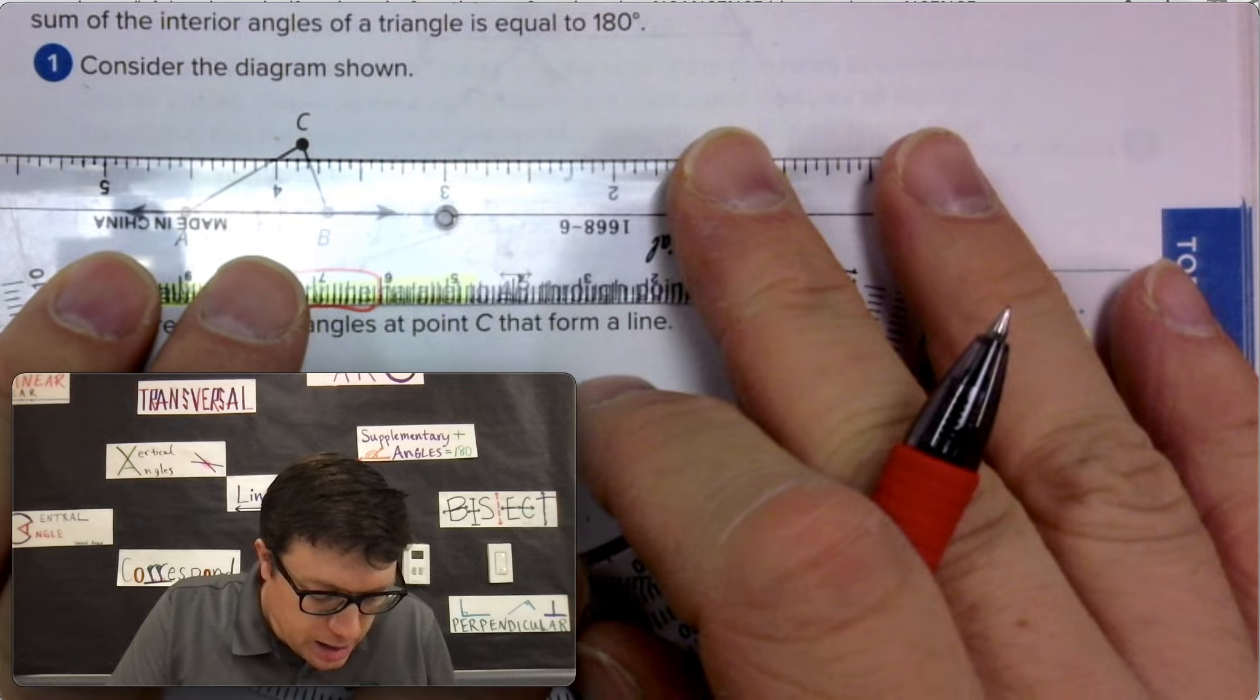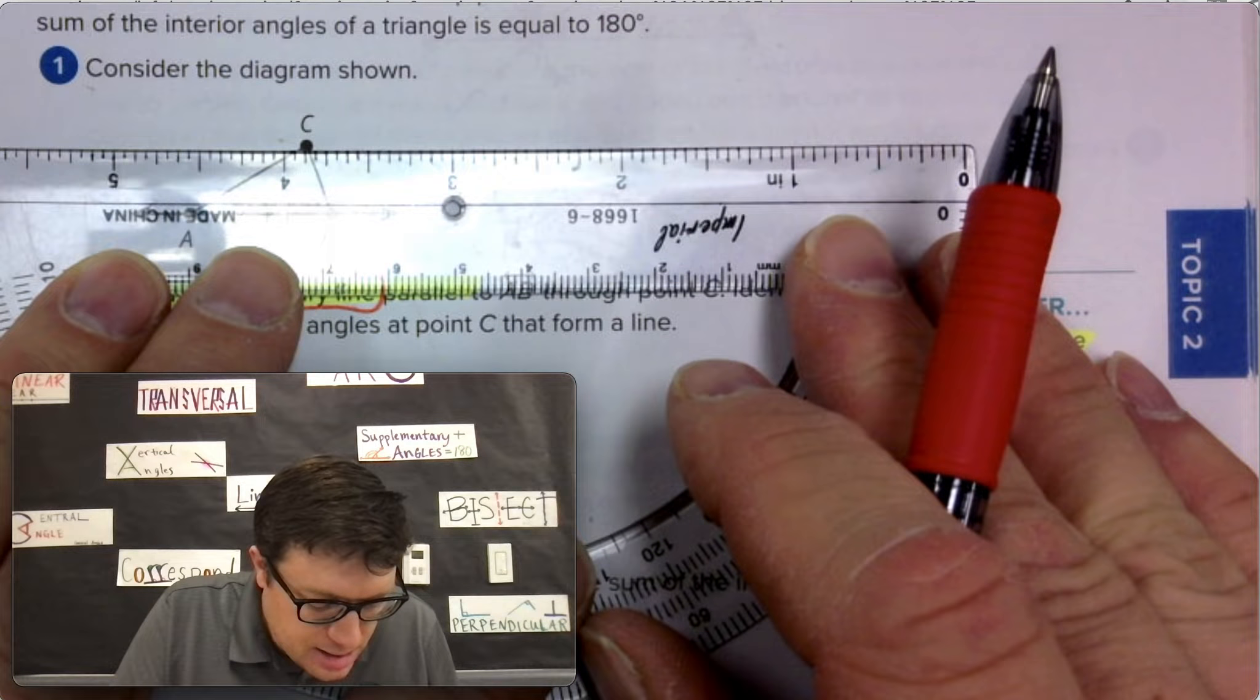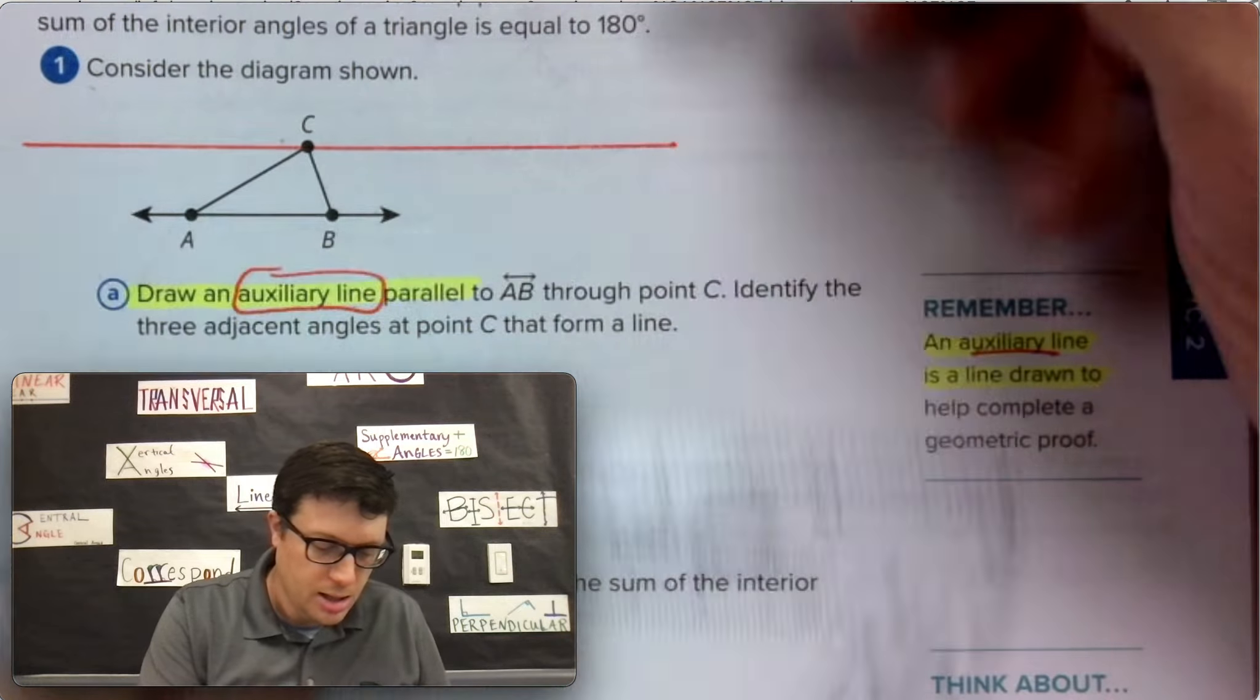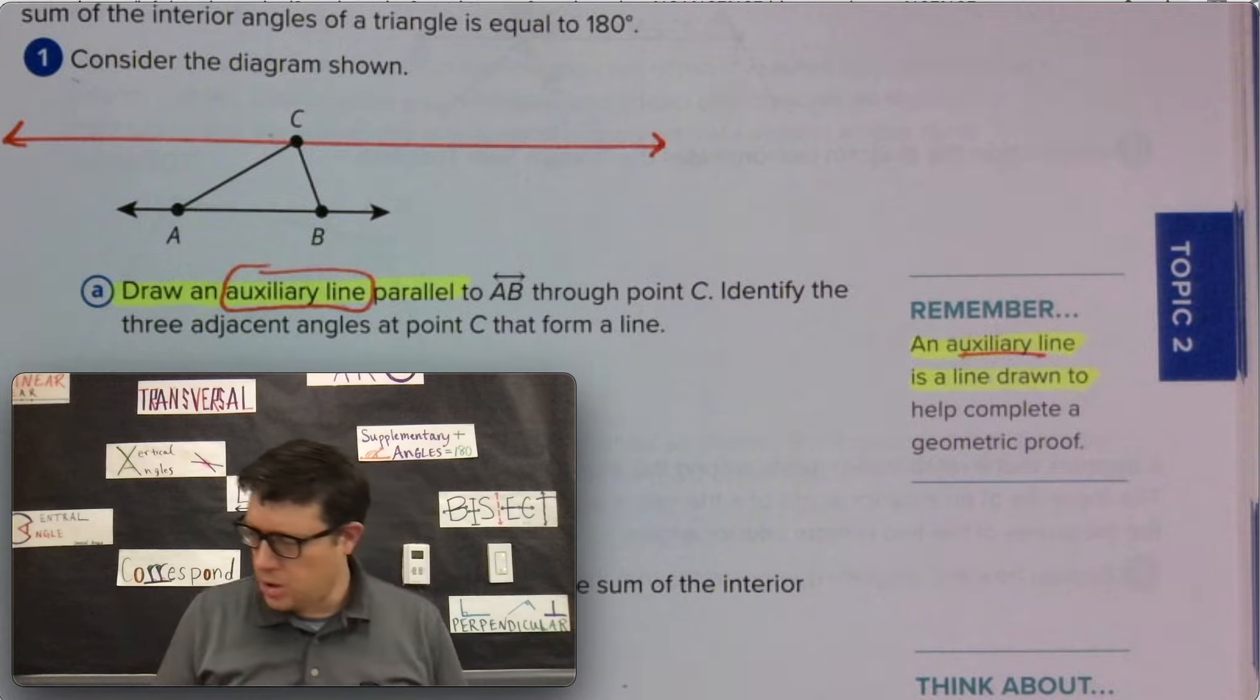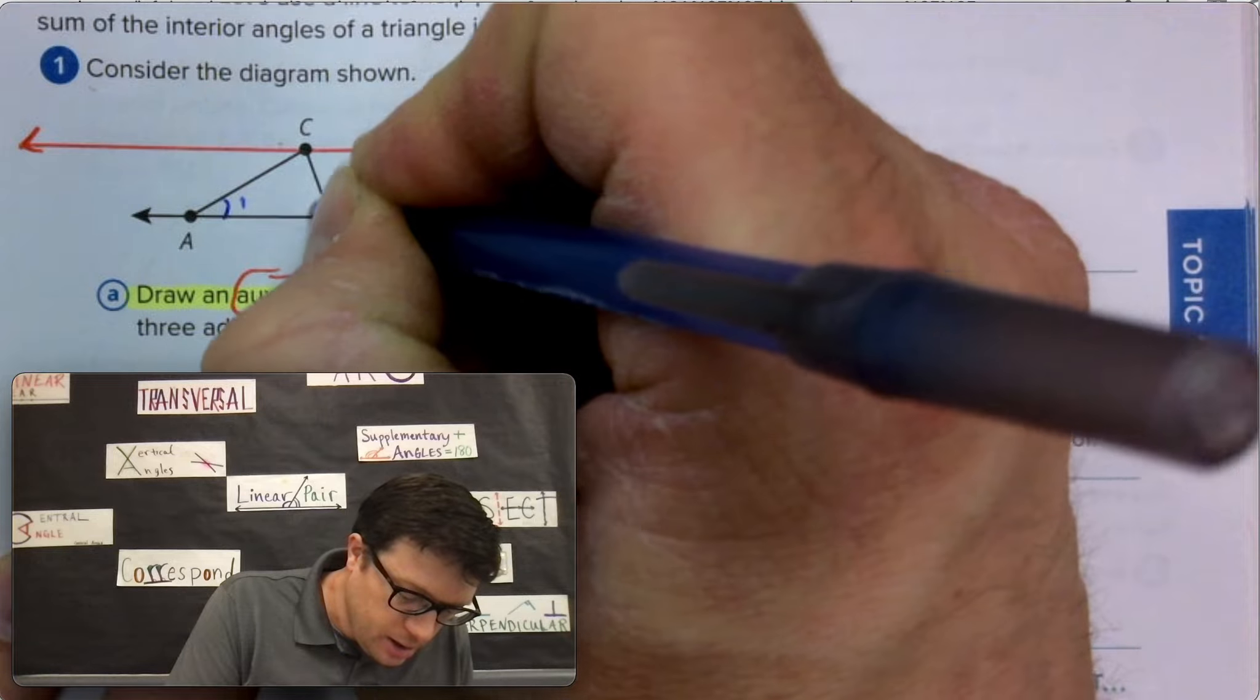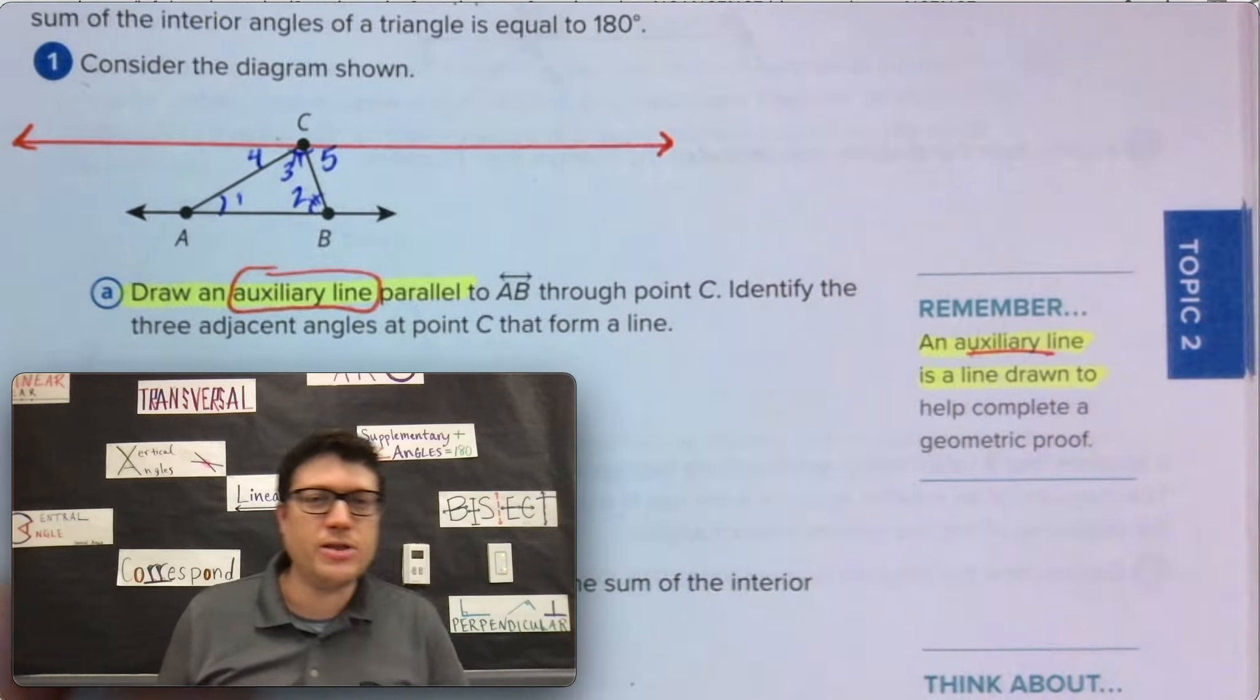We will draw that line parallel and kind of using a little bit of cheats. I'm using the black line of the protractor and trying to keep it evenly spaced from AB as I slide the protractor up through C. And there is my auxiliary line. We need to label some angles. So it's good with numbers. I'm going to say this is angle one, angle two, angle three. We'll put a four in that corner and a five in that corner.